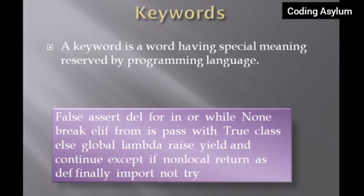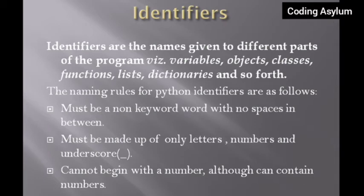Now let's deal with identifiers. Identifiers are the names given to different parts of a program — variables, objects, classes, functions, lists, dictionaries, and so forth. Identifiers are defined by programmers. We will be covering objects, classes, and functions in upcoming videos, so don't worry about those concepts right now.